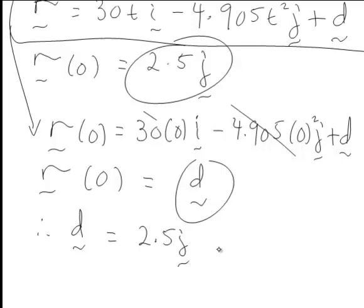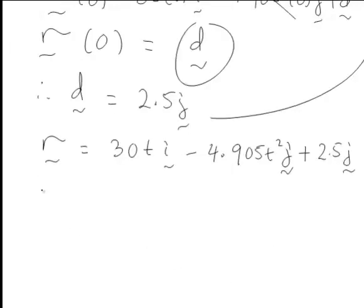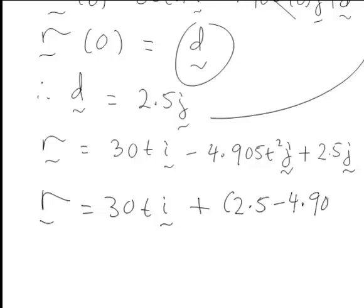Hence substituting that into our equation for r we can see that r in this case is equal to 30ti minus 4.905 t squared j plus 2.5j. Traditionally we'd group any like terms with the vector components so that it could be written as 30ti plus (2.5 minus 4.905 t squared) times j.